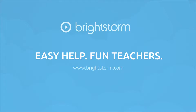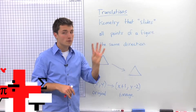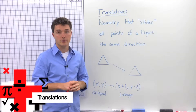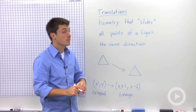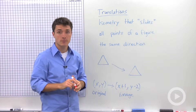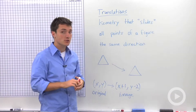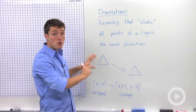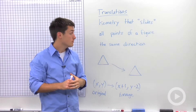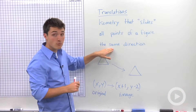BrightStorm has thousands of high-quality videos covering all major subjects. Please check out more at www.brightstorm.com. There are four types of transformations, three of which are isometries. One of these is a translation. A translation is an isometry that slides or moves all of the points on a figure in the same direction.